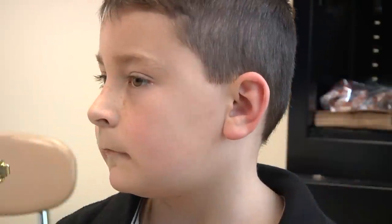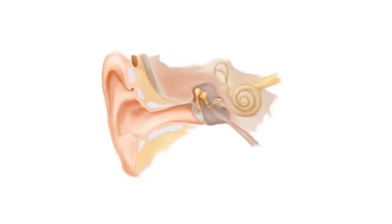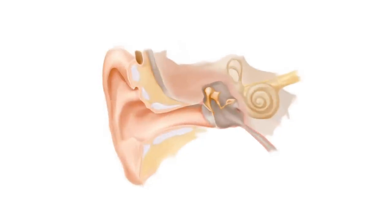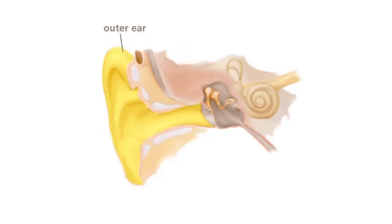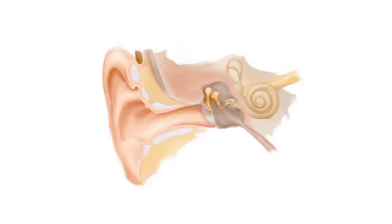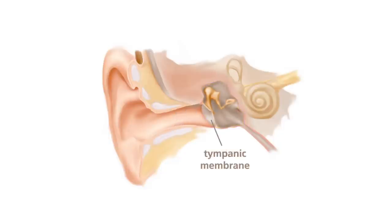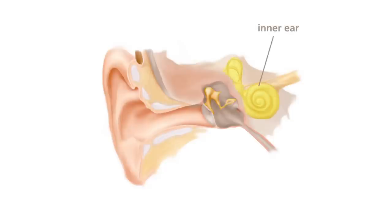The ear is a complex organ used to hear sounds. It takes sound waves from the air and transforms them into signals that the brain can understand. The ear has three main parts: the outer ear, middle ear, and inner ear. The outer ear is the part of the ear that you can see, and it includes the pinna and the ear canal. Sound waves travel down the ear canal toward the eardrum. The middle ear is an air-filled cavity that begins at the eardrum, or tympanic membrane, which is a thin membrane stretched tightly across the ear canal. When sound waves reach the eardrum, the eardrum vibrates a chain of bones, and the vibration is transmitted to the inner ear.